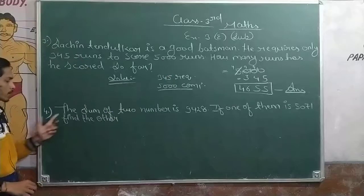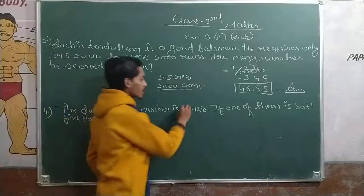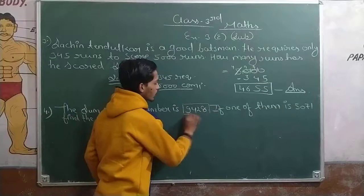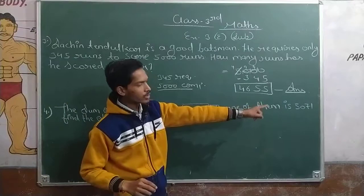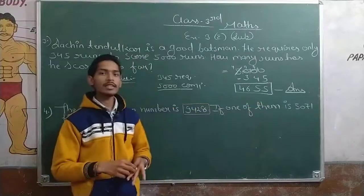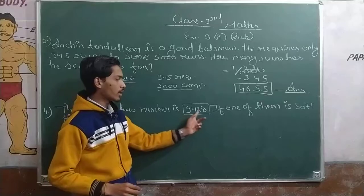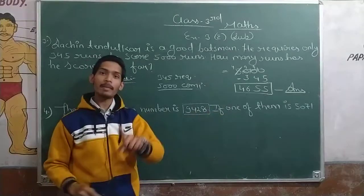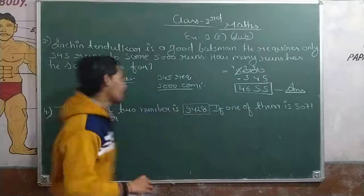Question 4. The sum of that two numbers is, your two numbers are 9,428. With which one number is 5,071. Listen to your two numbers, your sum is 9,428. With which one number is 5,071, your number is 5,071. We will find the solution.